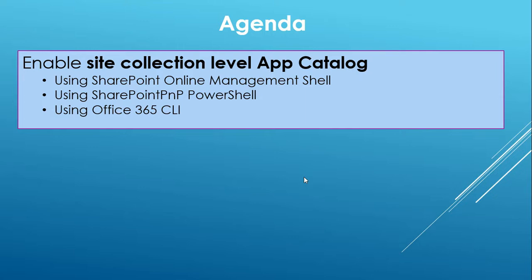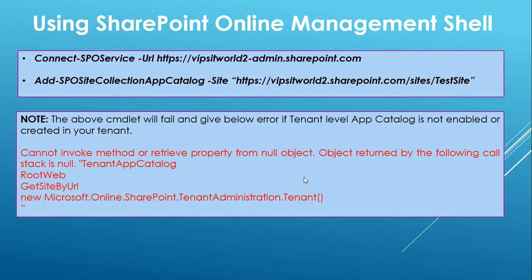I have seen many of you might be having confusion or may not have started with SharePoint PNP PowerShell and Office 365 CLI, so in this particular video you will see all three methods and how you can enable a site collection level app catalog. Let's first start by using SharePoint Online Management Shell.